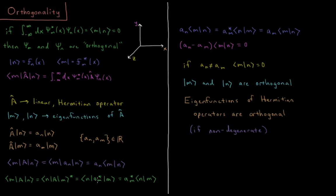So the complex conjugate of a_m we can factor out here, and that's a_m times the overlap of n and m. So we know that these two integrals are going to be equal to one another,